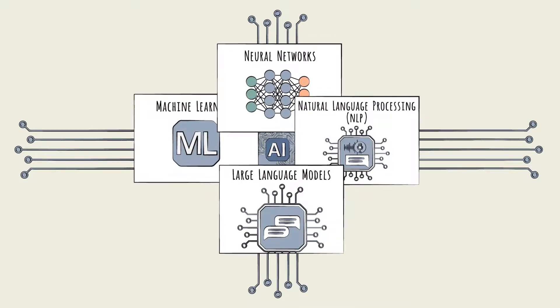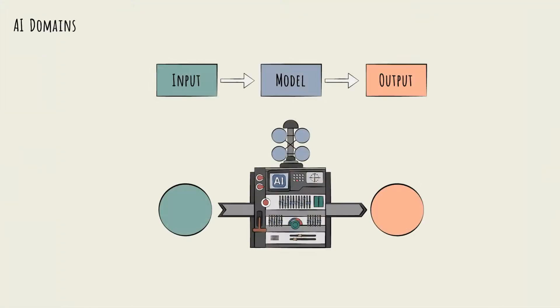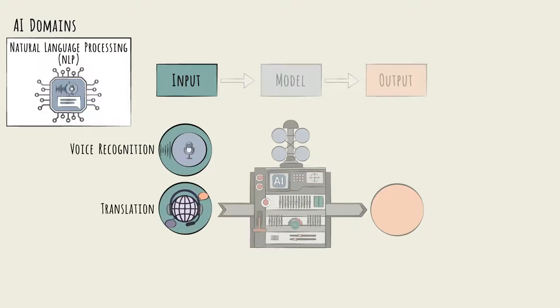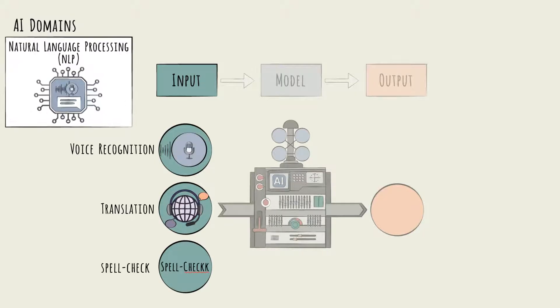Let's parse it a bit. Sometimes AI domains are described by the nature of the inputs they receive. For example, natural language processing, or NLP, is a domain that focuses on processing human language inputs. Voice recognition, translation, and modern spellcheck all rely on some version of NLP.